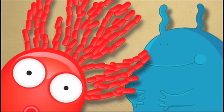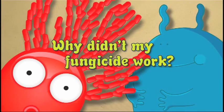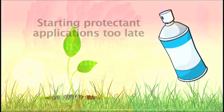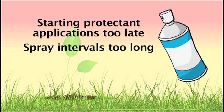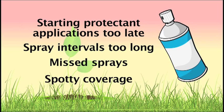Sometimes fungicides are used but disease still develops. Why didn't my fungicide work? Maybe it was a case of poor timing. Starting applications or protectant fungicides too late might do you in. Or maybe the intervals between applications were too long, or maybe you missed spraying or had spotty coverage. These can all cause you problems.